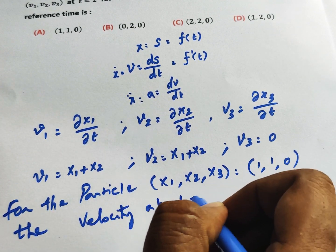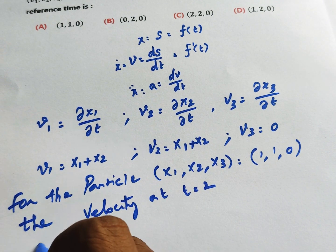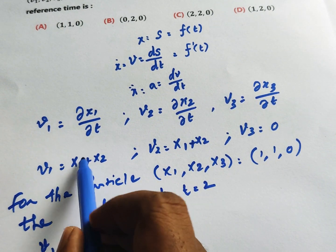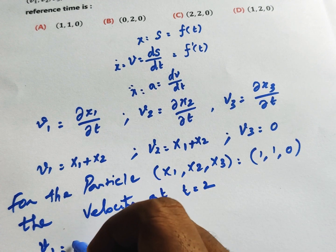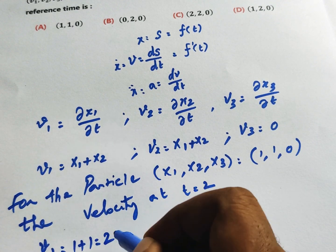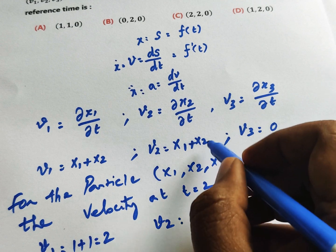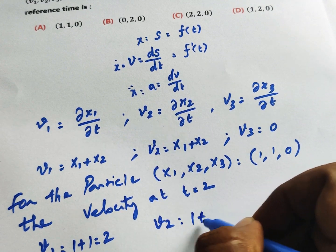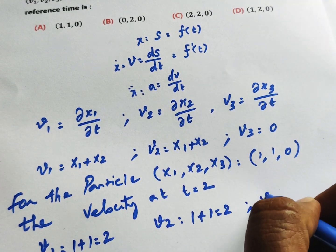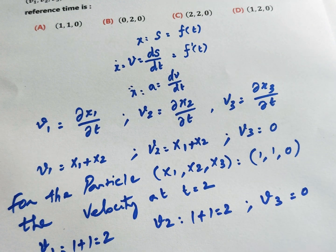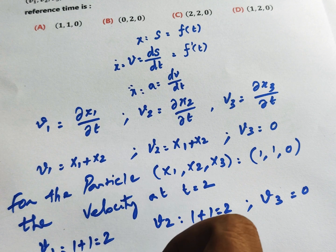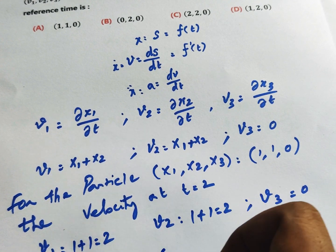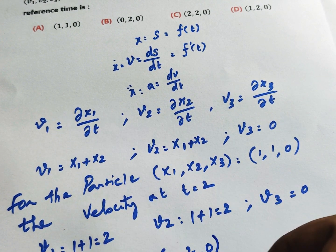At t = 2, v1 = X1 + X2 = 1 + 1 = 2. v2 = X1 + X2 = 1 + 1 = 2. v3 = 0. Therefore, (v1, v2, v3) = (2, 2, 0).